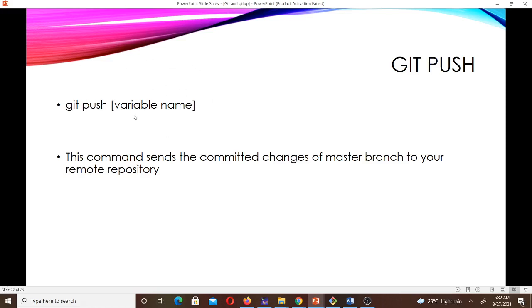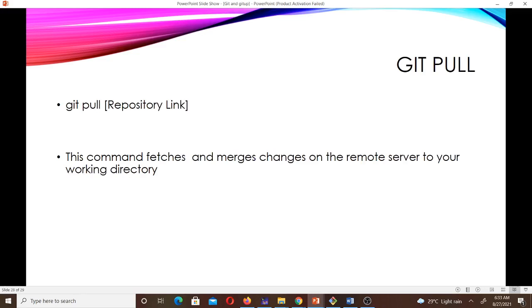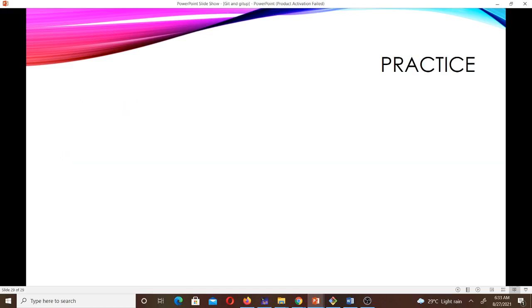git push sends the committed changes of the master branch to your remote repository. The syntax is: git push then the variable name. git pull fetches and merges changes from the remote server to your working directory. Now that we've gone through most of the commands, we want to do some practice.